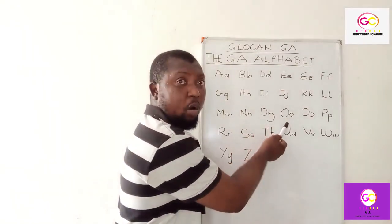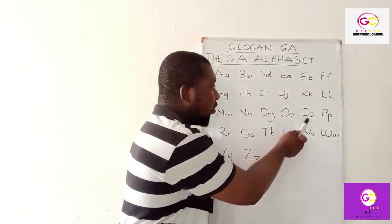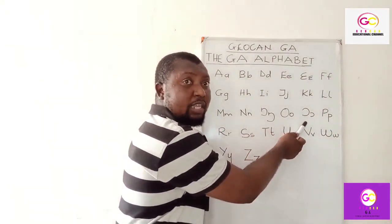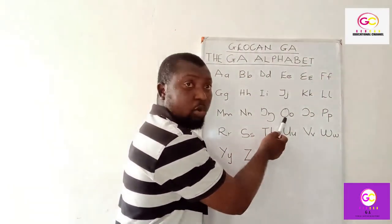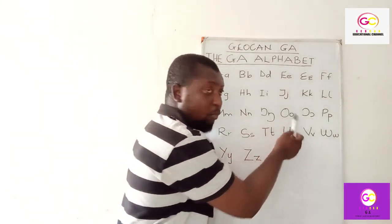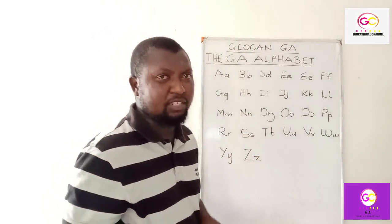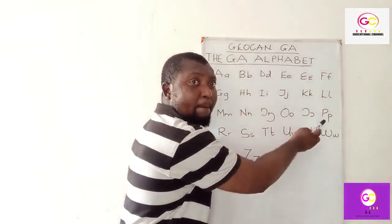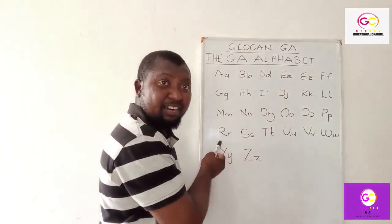This one sounds 'o' — say 'o.' And this one also sounds 'o' — say 'o.' Good. So this one is 'o' and this one is 'o' — they are distinct. When we start forming words, you will appreciate the difference even more. This one sounds 'p' — say 'p.'